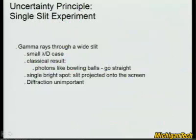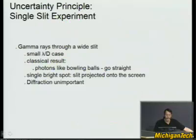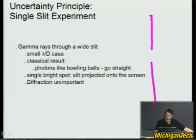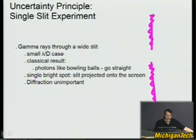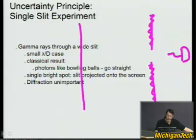If lambda over d is small — the case of, say, gamma rays — you try to shoot gamma rays through here. We're not going to allow the gamma rays to go right through the screen; we consider the opaque board to be truly opaque no matter the wavelength of the photon. We're not going to allow tunneling or driving through. When lambda over d is small, you might consider the photons are like gamma rays and they're like bowling balls — they just go straight through. It's the closest thing to classical mechanics, so diffraction is unimportant. If you have a flashlight and a screen, you'll just get a spot on the screen.